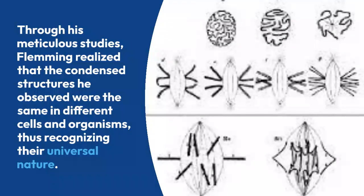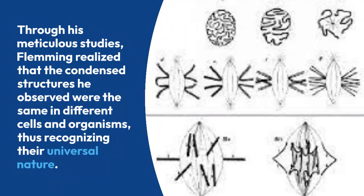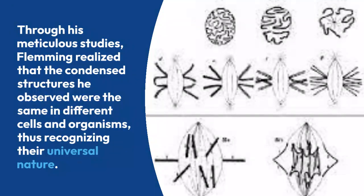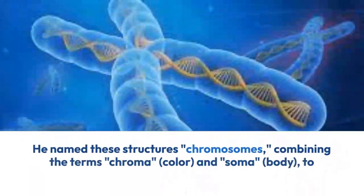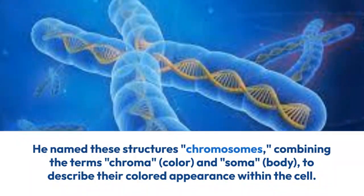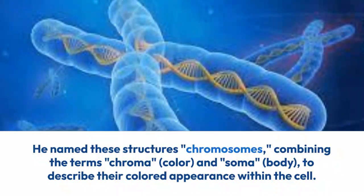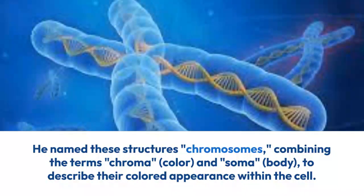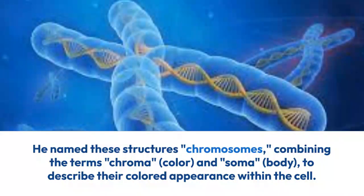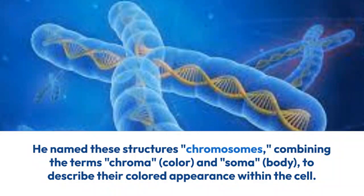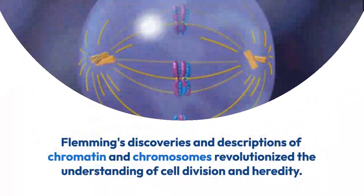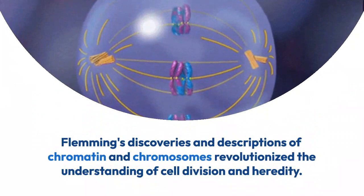Through his meticulous studies, Fleming realized that the condensed structures he observed were the same across different cells and different organisms, thus recognizing their universal nature. He named these structures 'chromosomes,' combining the terms 'chroma' meaning color and 'soma' meaning body, to describe the colored appearance of these structures within the cell.